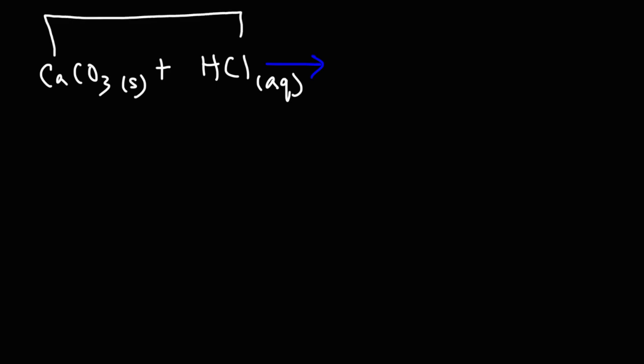So calcium is going to pair up with chlorine. As an ion, calcium has a 2 plus charge. Chlorine acquires a negative charge as an ion. So in order to neutralize the charges, we need to combine them in a 1 to 2 ratio. We need one calcium ion to pair up with two chloride ions. So the total positive charge will be 2 plus. The total negative charge will be negative 2 or 2 minus.